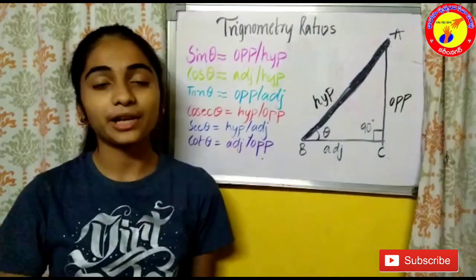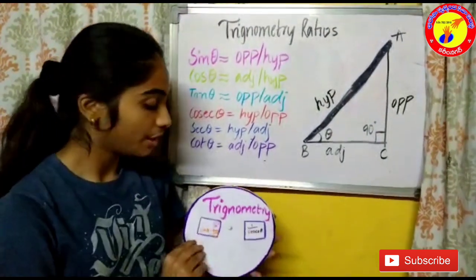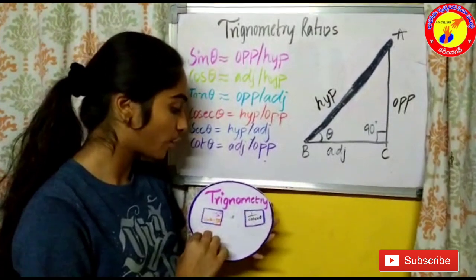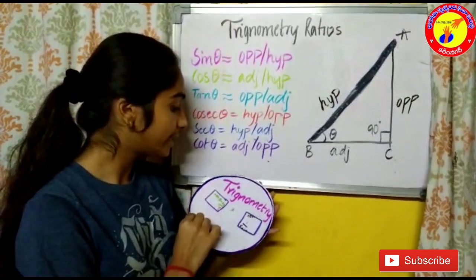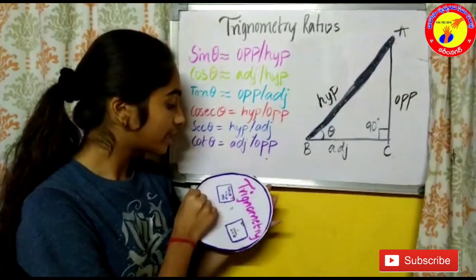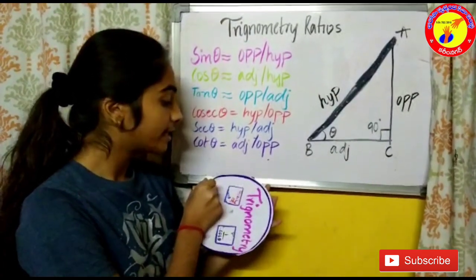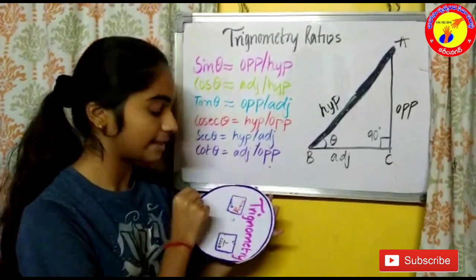Now I am going to explain reciprocals of trigonometric ratios. Sin theta's reciprocal is 1 by cos theta, cos theta's reciprocal is 1 by sec theta, tan theta's reciprocal is 1 by cot theta, cos theta's reciprocal is 1 by sin theta, and sec theta's reciprocal is 1 by cos theta.